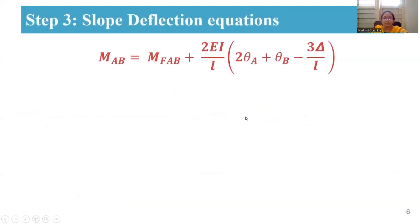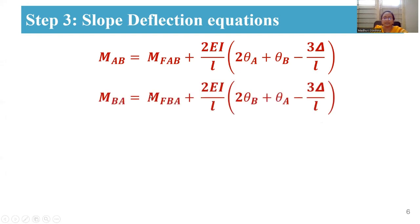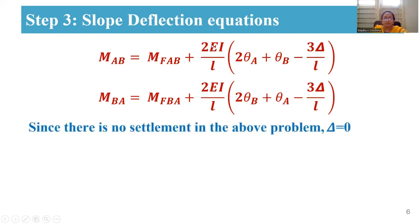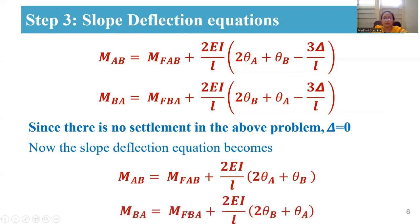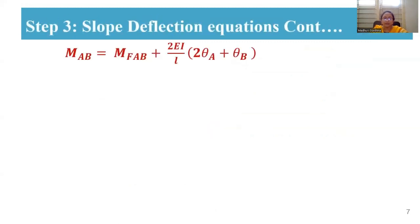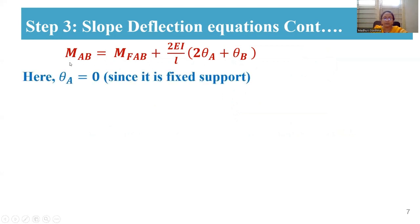Now we apply the slope deflection equations. The general equation is: M_AB = mf_AB + (2EI/L)(2θ_A + θ_B − 3Δ/L), and similarly for M_BA. Since there is no settlement in this problem, delta equals zero, so the equations reduce to: M_AB = mf_AB + (2EI/L)(2θ_A + θ_B) and M_BA = mf_BA + (2EI/L)(2θ_B + θ_A).